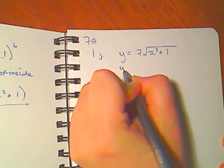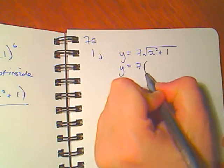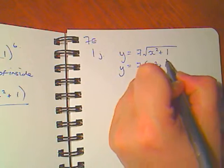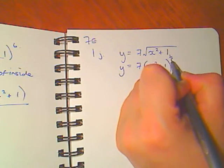So first I'm going to rewrite the question so I can rewrite y equals 7. I have x squared plus 1, the square root means to the power of a half.